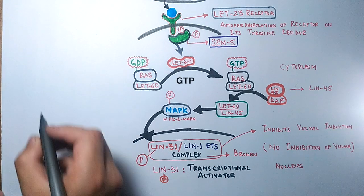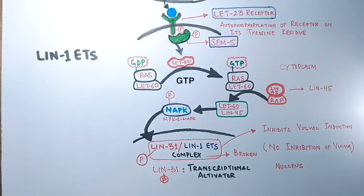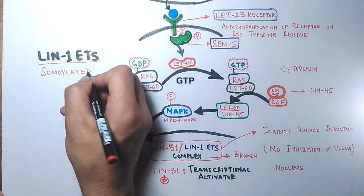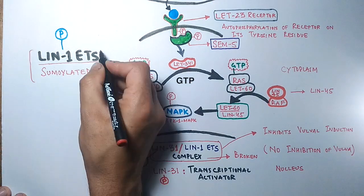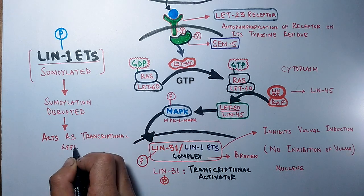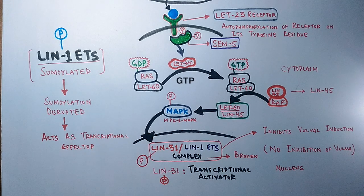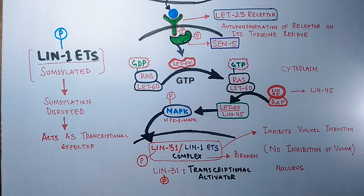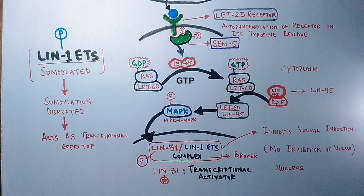Now looking at the lin-1 ETS molecule, it's in the sumoylated form. In its sumoylated form, lin-1 acts as an inhibitor molecule. But when lin-1 is phosphorylated by MAPK, the sumoylation is disrupted and lin-1 now acts as a transcriptional effector for vulval developmental process. This is how vulval fate is determined via signaling for vulval precursor cells.